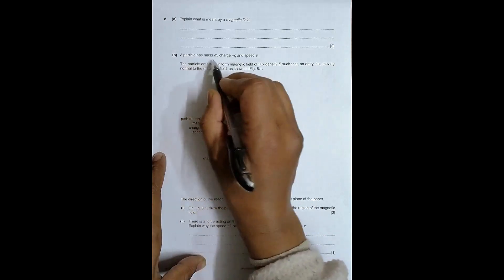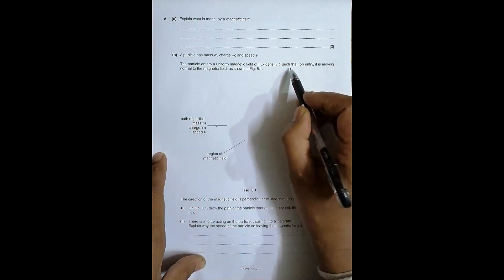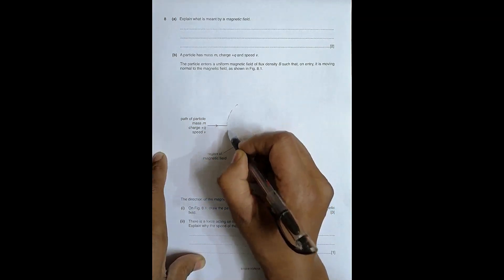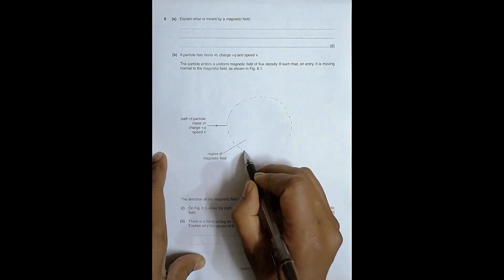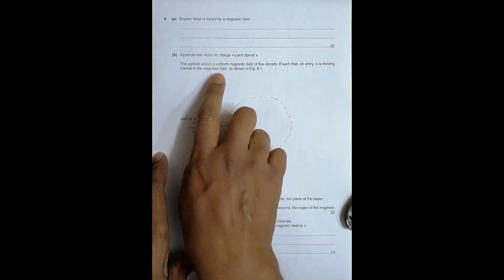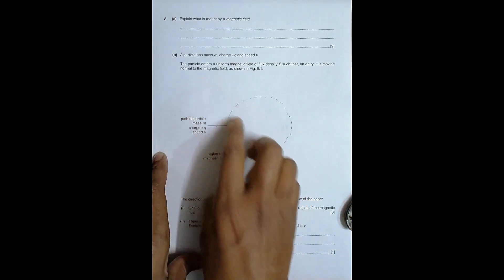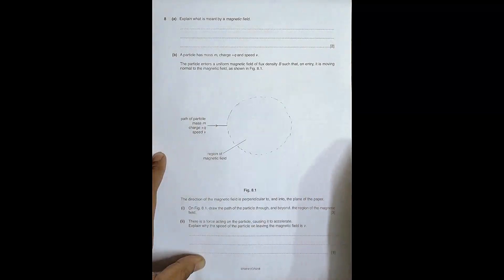In part (b), a particle has mass M, charge +Q, and speed V. The particle enters a uniform magnetic field of flux density B such that on entry it is moving normal to the magnetic field. There is a shaded circular area shown in the original question — I'm drawing it here. The direction of the magnetic field is perpendicular to the paper and into the plane of the paper.